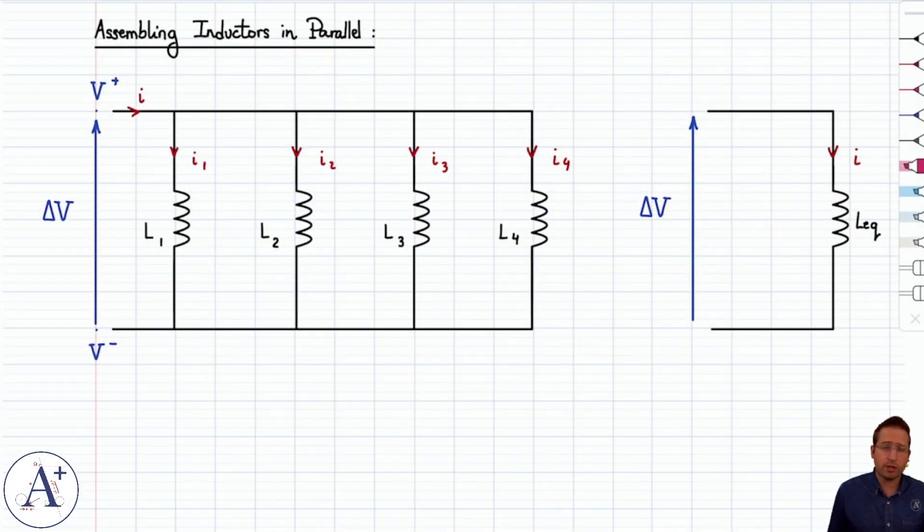We've considered resistors in parallel and capacitors in parallel before, and computed the equivalent resistance and the equivalent capacitance. So now let's do the same thing with inductors in parallel, and the goal here is going to be to generalize a formula that allows us to compute the equivalent inductance, and we'll do it based off an arrangement with four inductors in parallel.